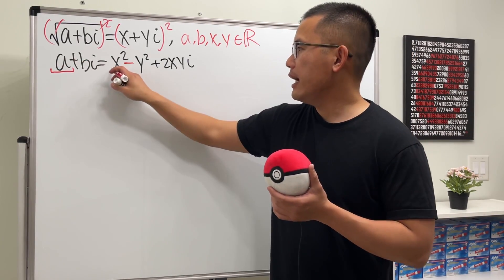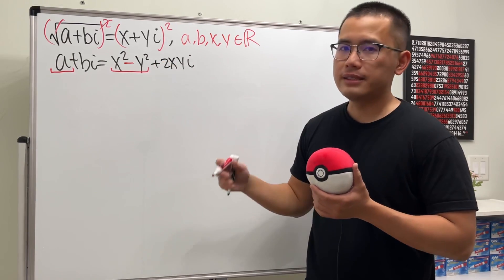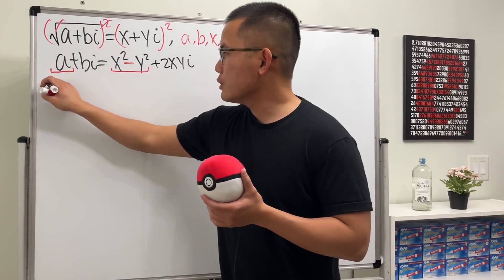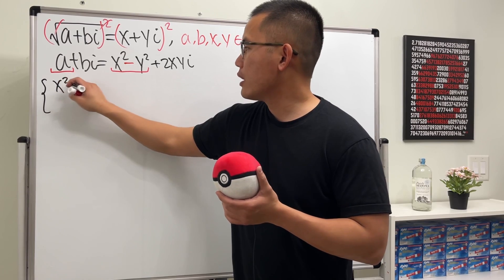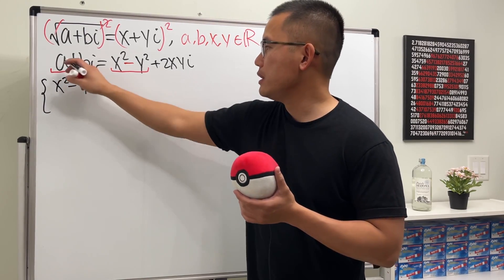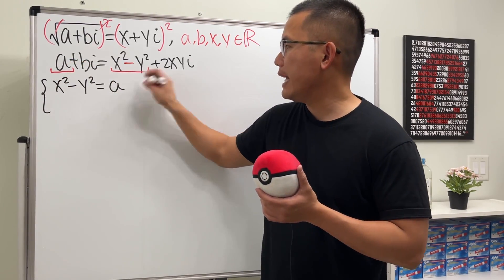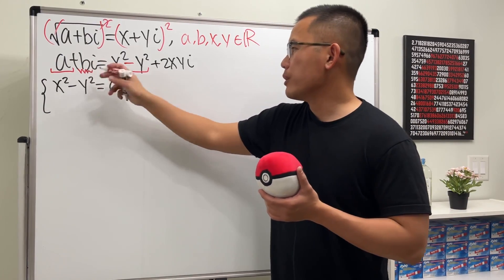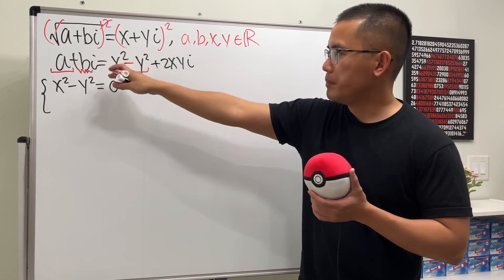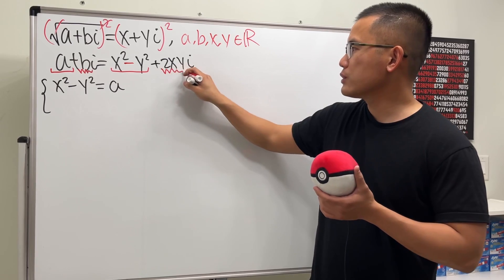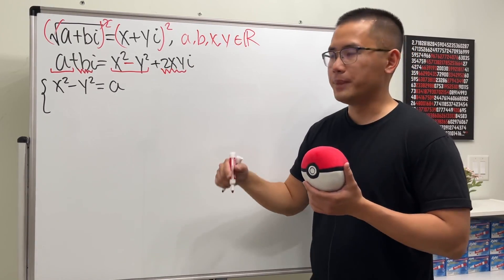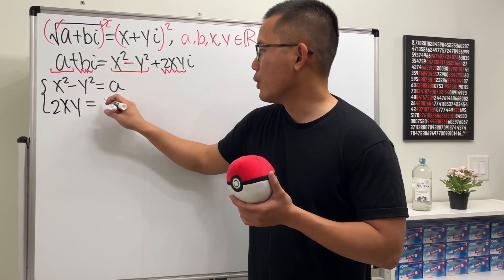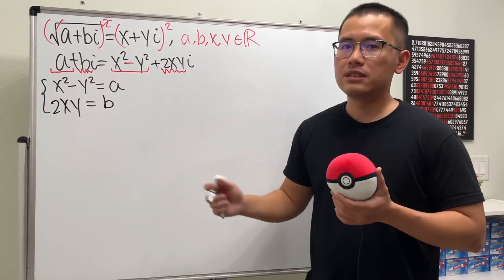The real part on the left is a, and on the right it's x² - y², so we set x² - y² = a. The imaginary part gives us b on the left and 2xy on the right, so 2xy = b. Now we have a system of equations.